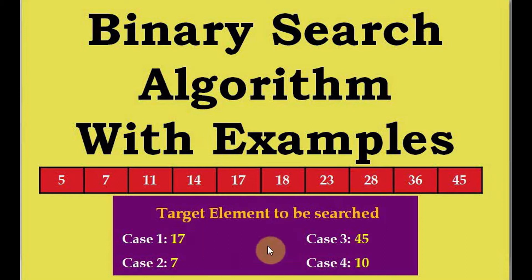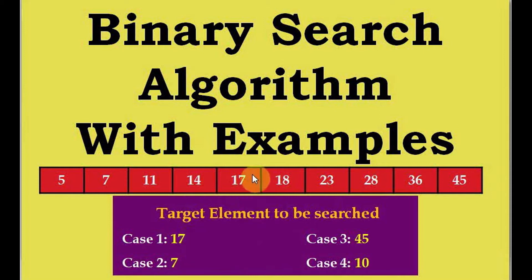I have taken four test cases for our example. Case 1 is 17, which is exactly the middle element of the list. Case 2 is 7, which is less than the middle element. Case 3 is greater than the middle element of the list. And case 4, the value 10, is not present in the array at all.